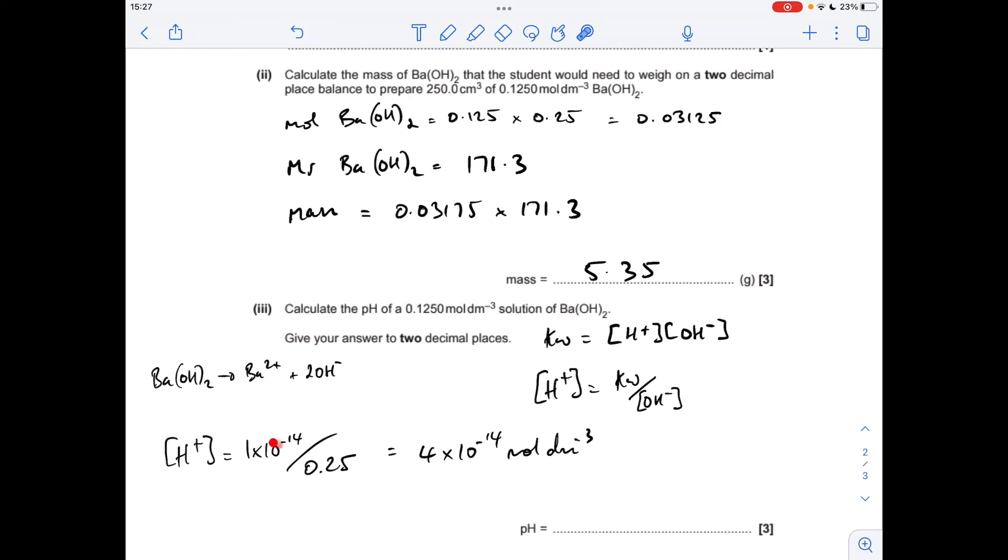Numbers-wise, H plus concentration is the Kw value - we're assuming 25 degrees C, there's been no mention of temperature - so 1 times 10 to the minus 14 over 0.25, remember, 2 times that. The H plus concentration is that many moles per decimeter cubed, so we just need to minus log that for the pH. The pH comes out at 13.40 to 2 decimal places.